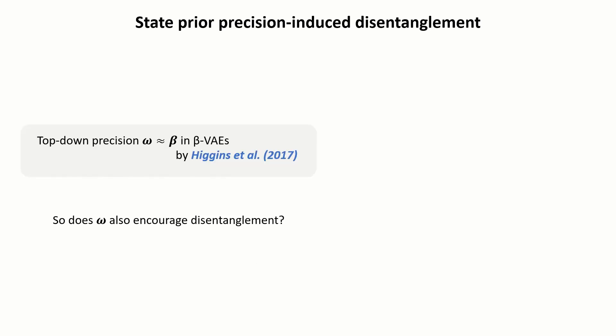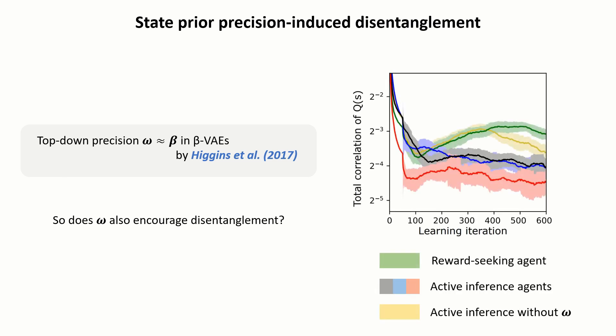This performance is even better using our top-down precision mechanism, which has an analogous effect to the parameter beta in beta VAEs, and as we show, makes the agents learn more disentangled latent representations.